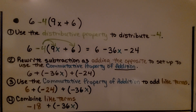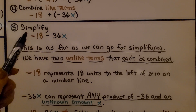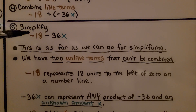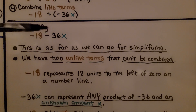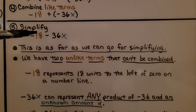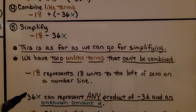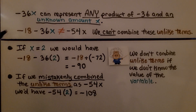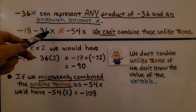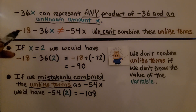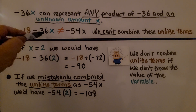Now we simplify as negative 18 minus 36x. This is as far as we can go. We have two unlike terms that can't be combined — negative 18 represents 18 units to the left of 0 on a number line, while negative 36x can represent any product of negative 36 and an unknown x. Negative 18 minus 36x does not equal negative 54x because one term has no variable and the other does.